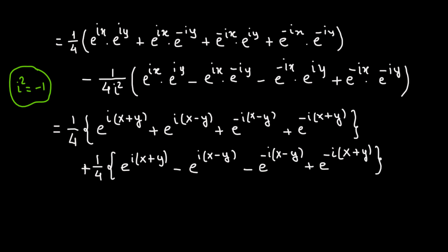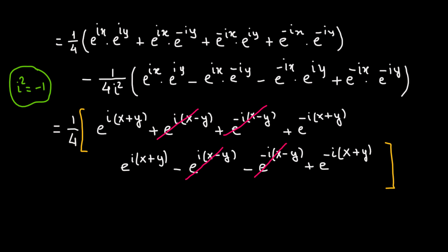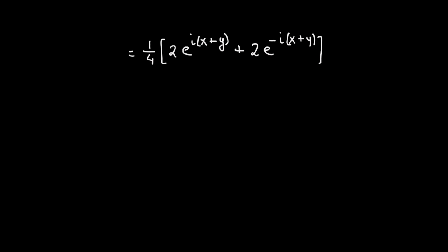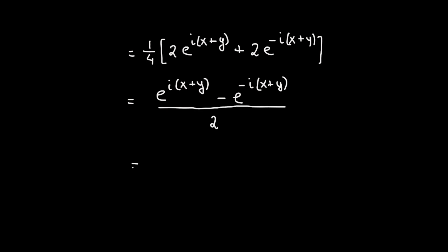The 1 over 4 is common so we factor it out, and we find that certain terms cancel out, leaving us with 2 times e raised to the power of i times x plus y, plus 2 times e raised to the power of negative i times x plus y. Factoring out 2 from numerator and denominator finally gives us e raised to the power of i times x plus y plus e raised to the power of negative i times x plus y, divided by 2 — which is nothing but cosine of x plus y. We have found the left hand side.